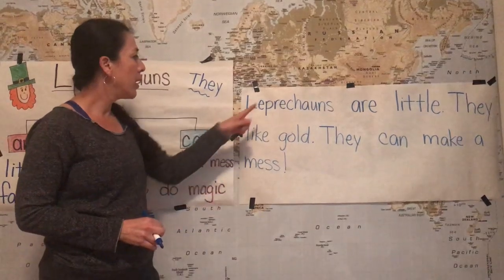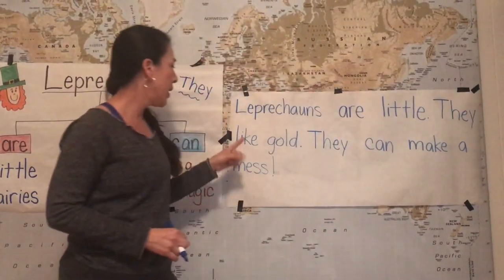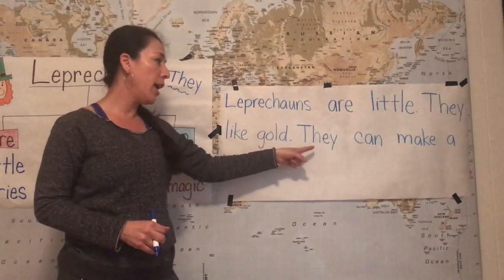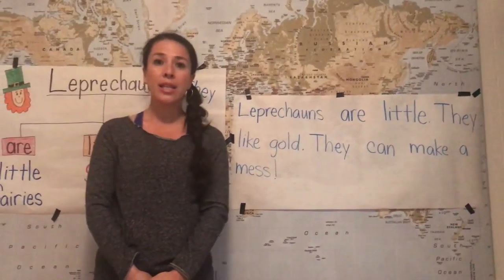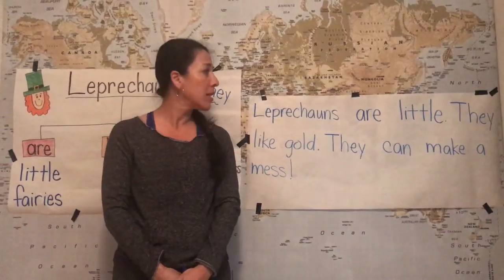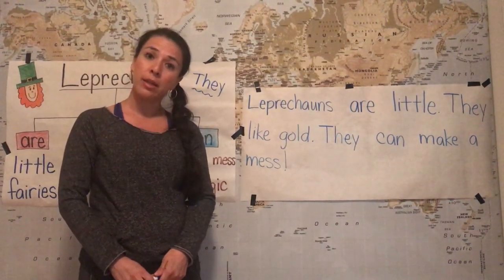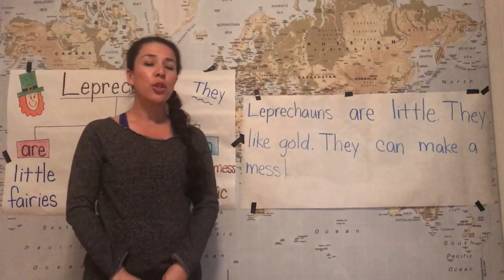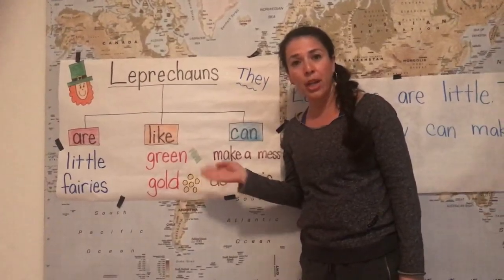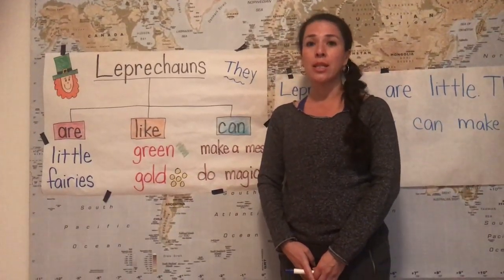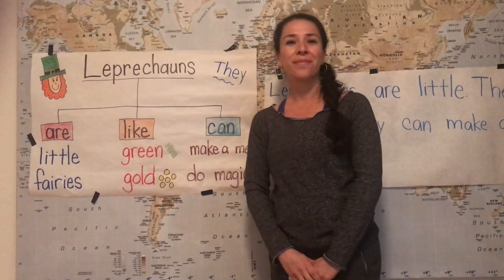Now I'm going to check my work. I'm going to read my sentences again and make sure it makes sense. Leprechauns are little. They like gold. They can make a mess! I think that makes sense, and my sentences begin with a capital letter and I remember my period. Now it's your turn — go get a piece of paper, use the tree map, and go ahead and write your own sentences about leprechauns. Have fun!